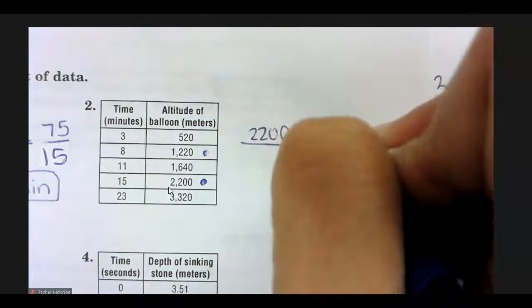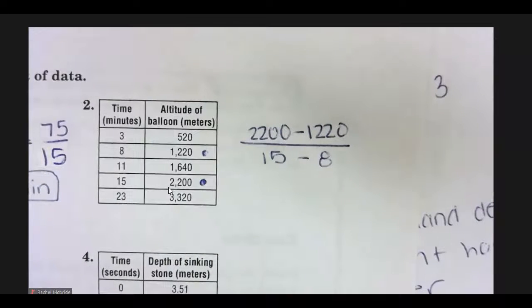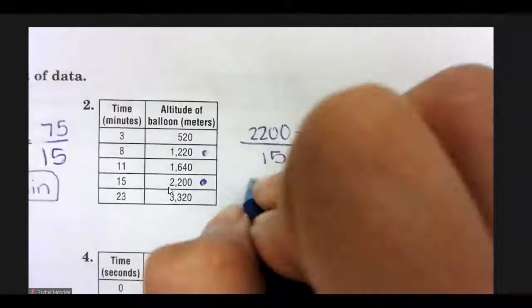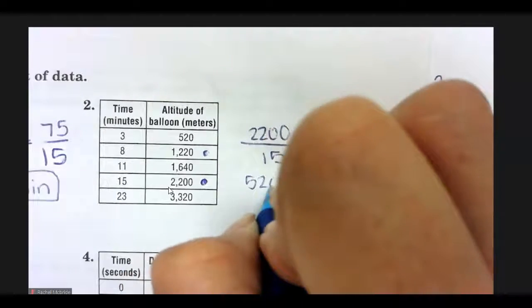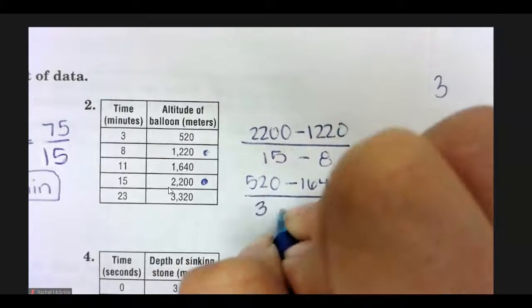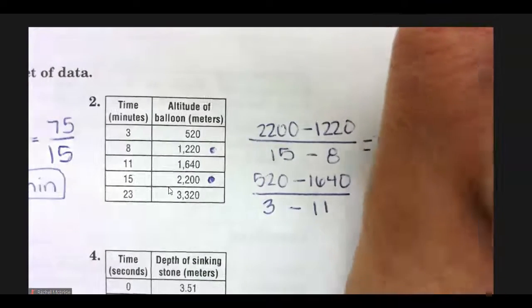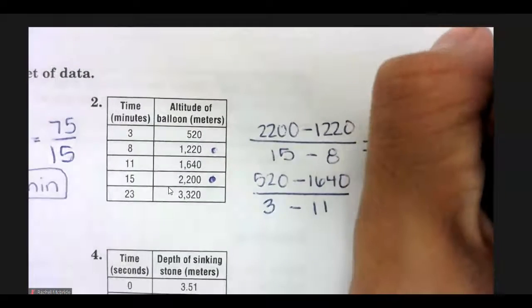So, you would have 2,200 minus 1,220 over 15 minus 8 as just one example. So, you could have also done 520 minus 1640 over 3 minus 11. So, again, you just have to be consistent in the order you write them and how you type it on a calculator. So, we get 140 meters per minute.